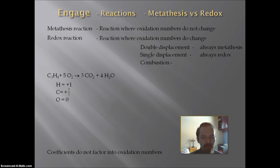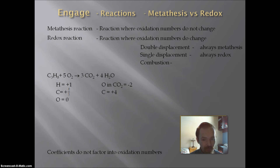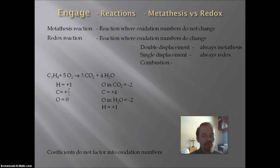On the product side, in carbon dioxide, oxygen is in a compound, so its oxidation number is minus 2. Two oxygens give minus 4, so carbon must be plus 4. In water, oxygen is in a compound so it's minus 2, and hydrogen is bonded with a non-metal so its oxidation number is plus 1. So hydrogen is plus 1 on both sides. Carbon goes from positive 8/3 to positive 4, and oxygen goes from 0 to minus 2 — both oxidation numbers are changing.